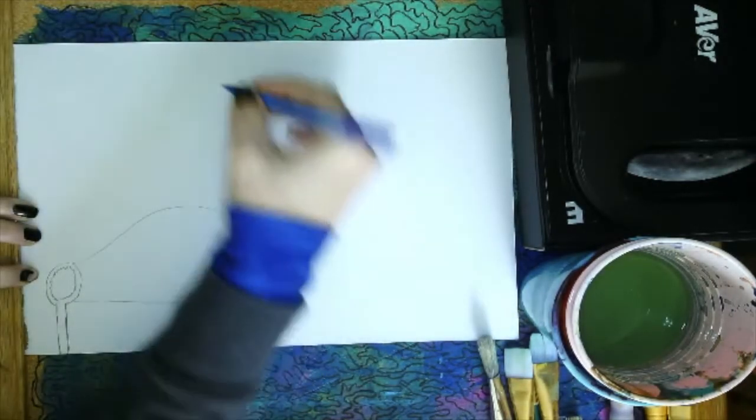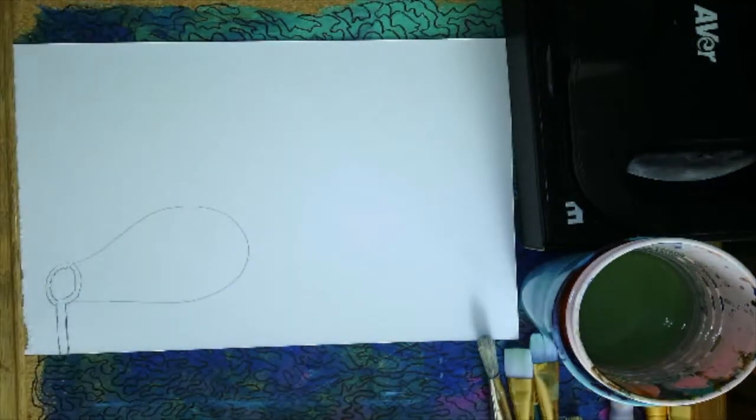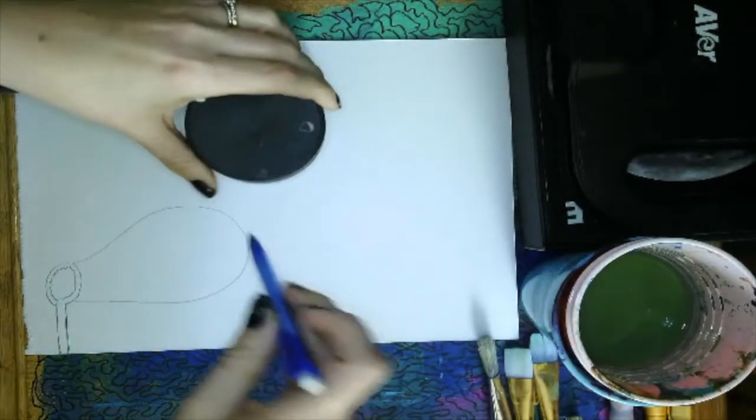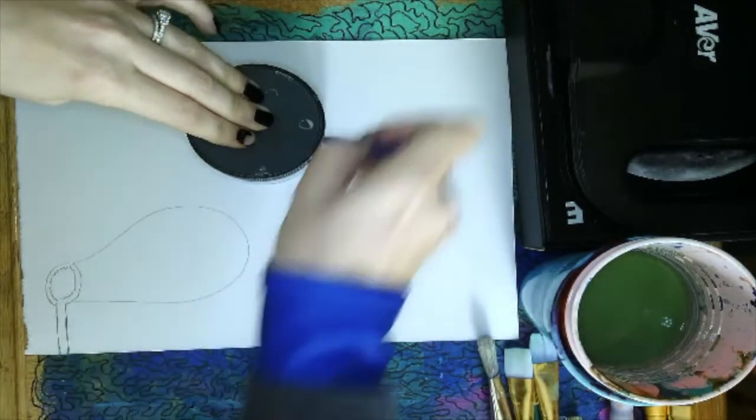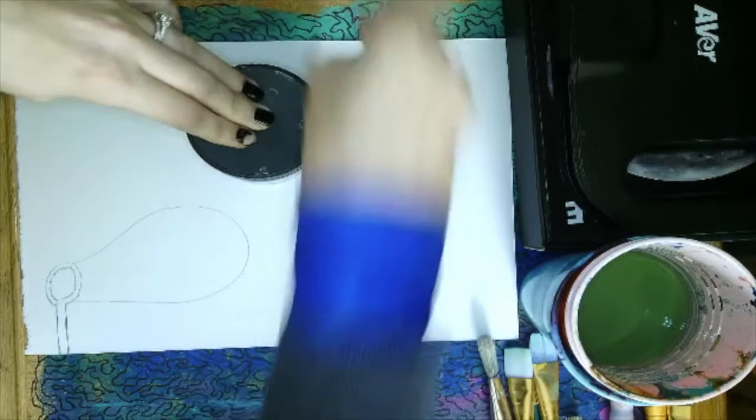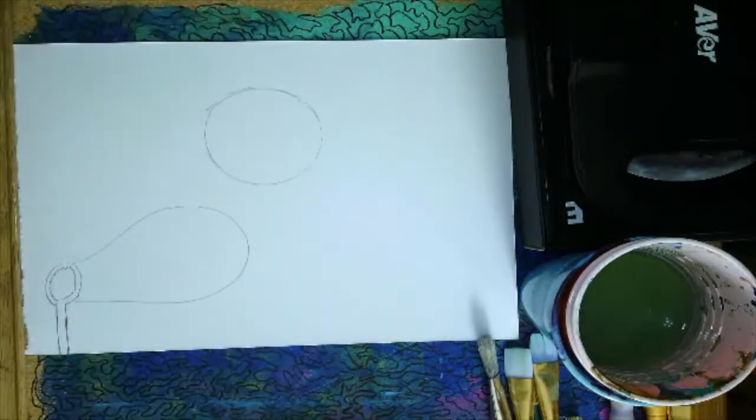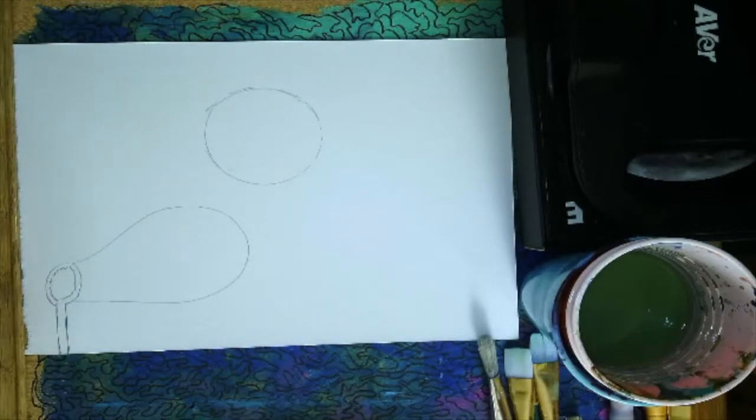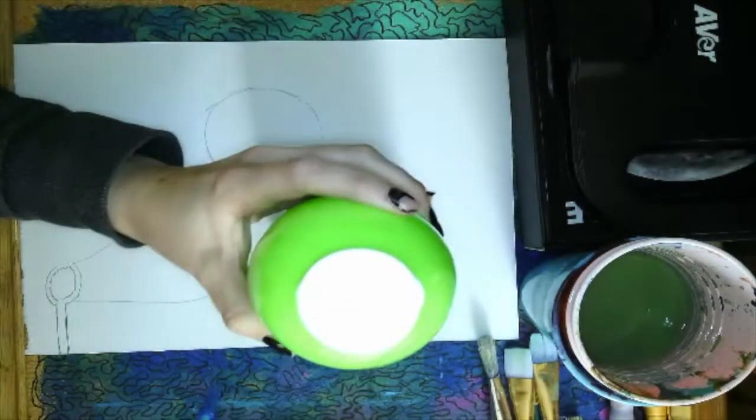And I could pretend like I already blew some bubbles and I could draw some more circles. And for these circles, if you want, you could get an object and trace a circle, or you could just try to draw some circles. So I'm going to trace a few things that I have just near me.